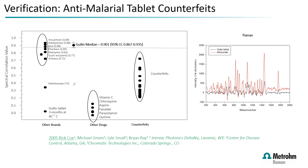The system is also used for verification and anti-counterfeiting applications — for example, verifying anti-malarial tablets in the field in sub-Saharan Africa. We can see very tight groupings between genuine products and counterfeited materials. This is also extremely useful with orbital raster scanning because you see more of the tablet itself, which becomes more representative and improves the confidence score of the match.